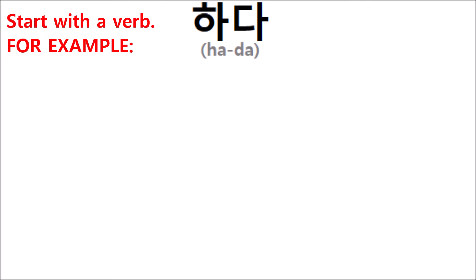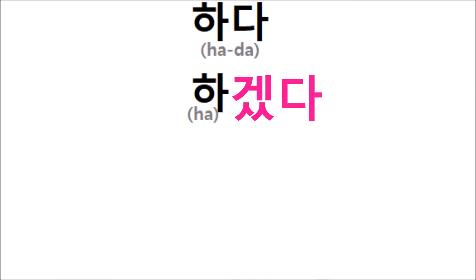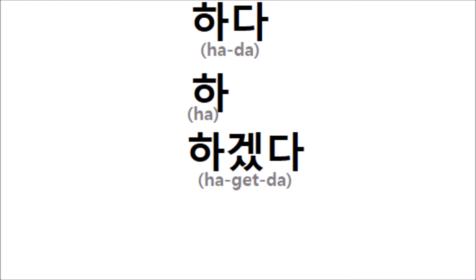Well, first, start with a verb — any verb will do. Let's use hada, meaning 'to do.' First thing, as usual, we cut off the da. Then we add the future presumptive ending, which is very simply getta. So we've got ha-getta.